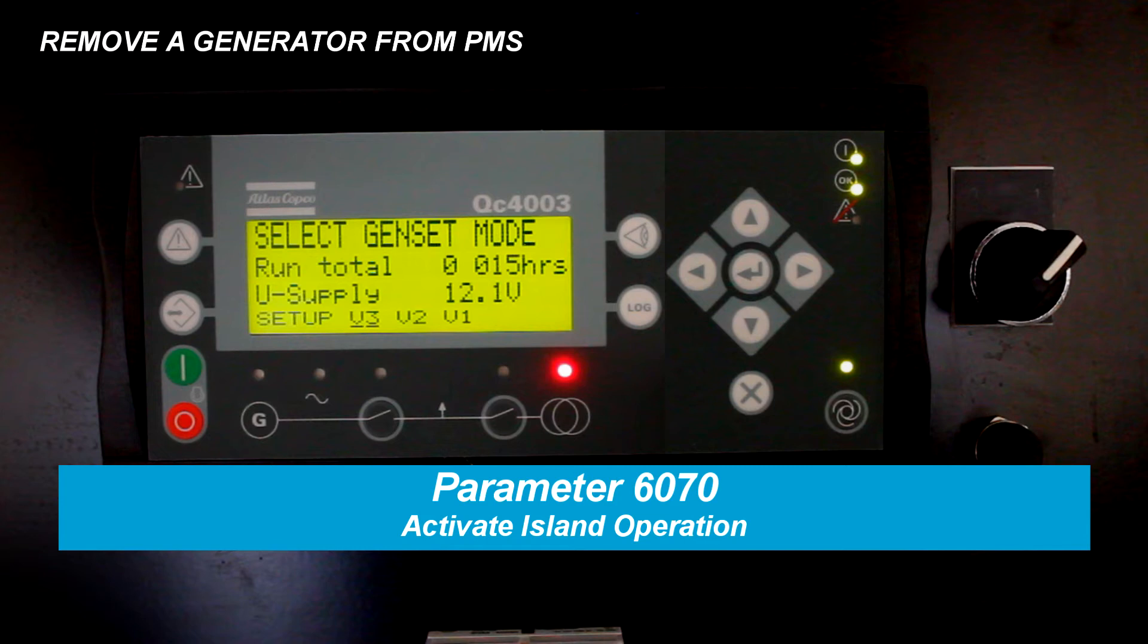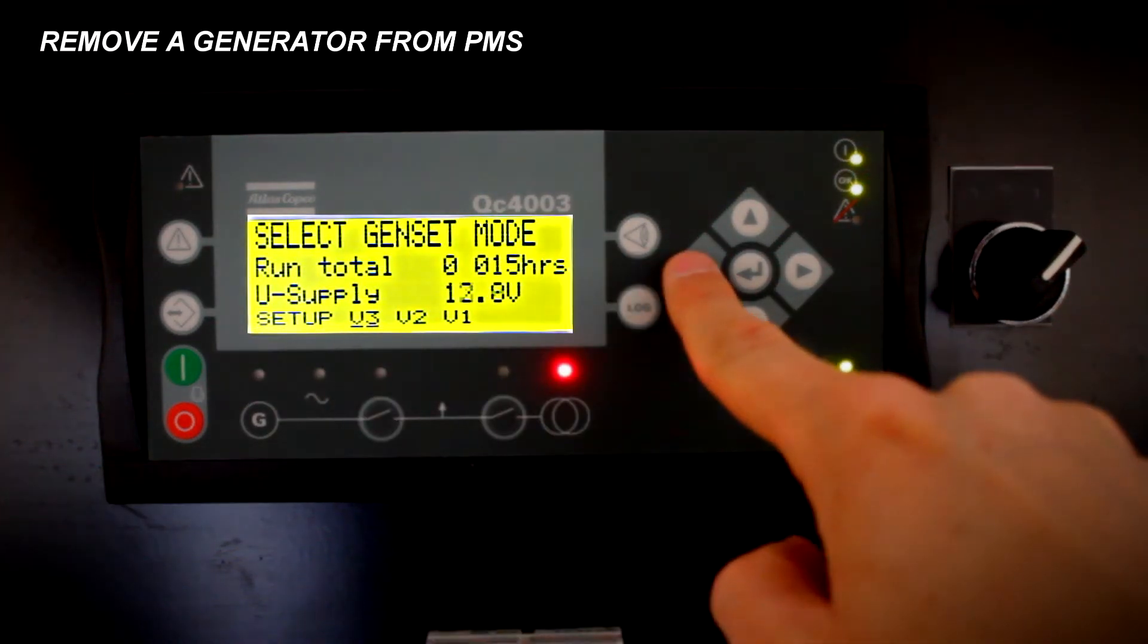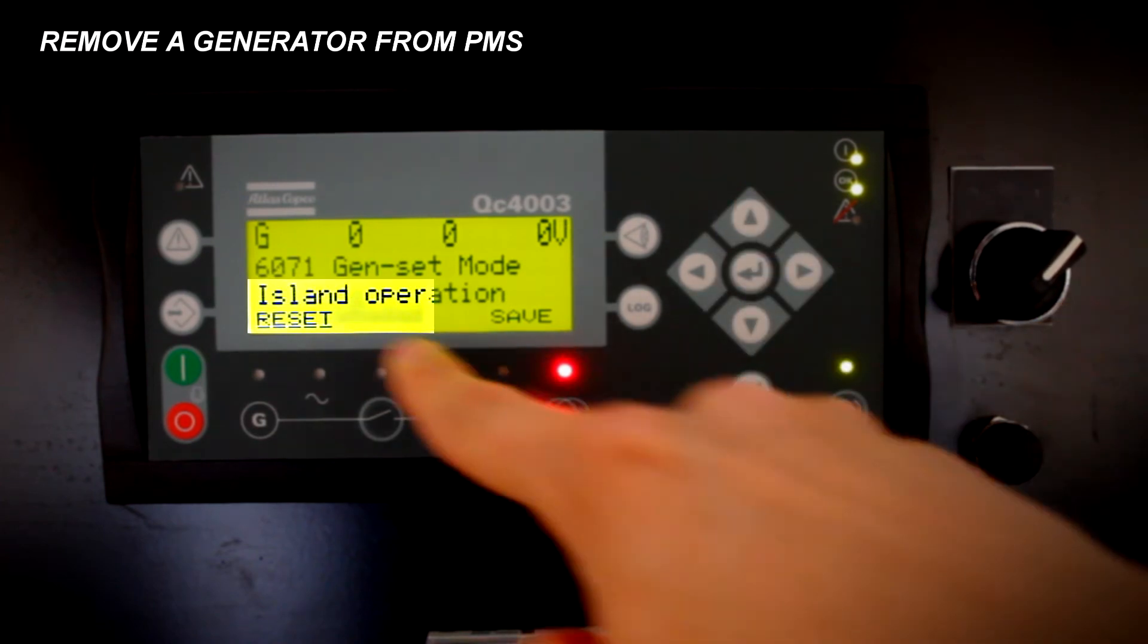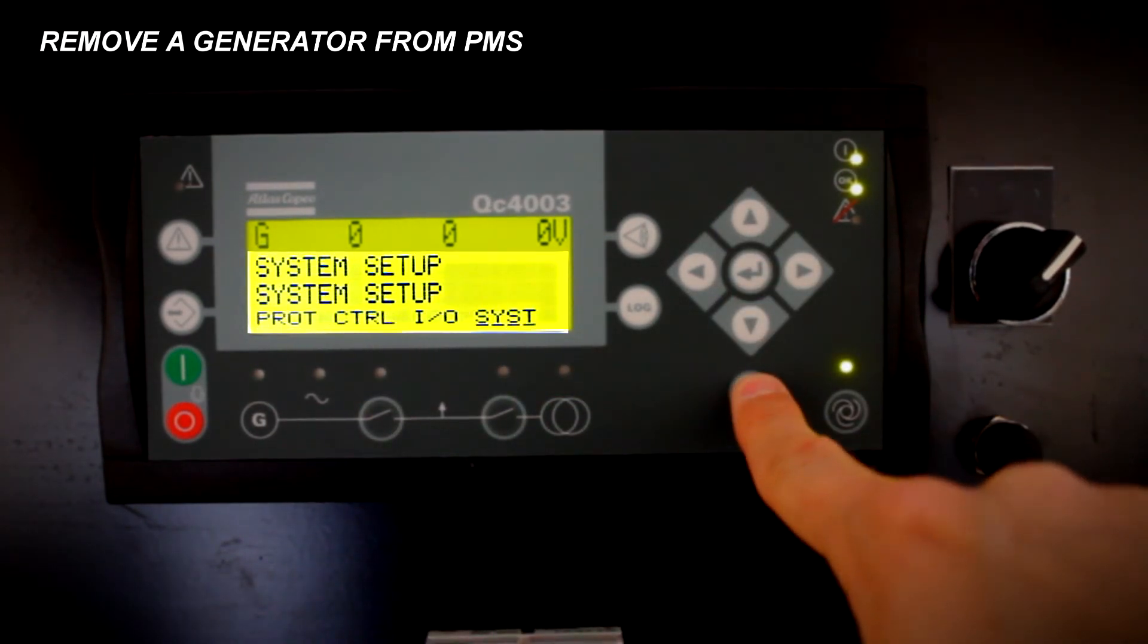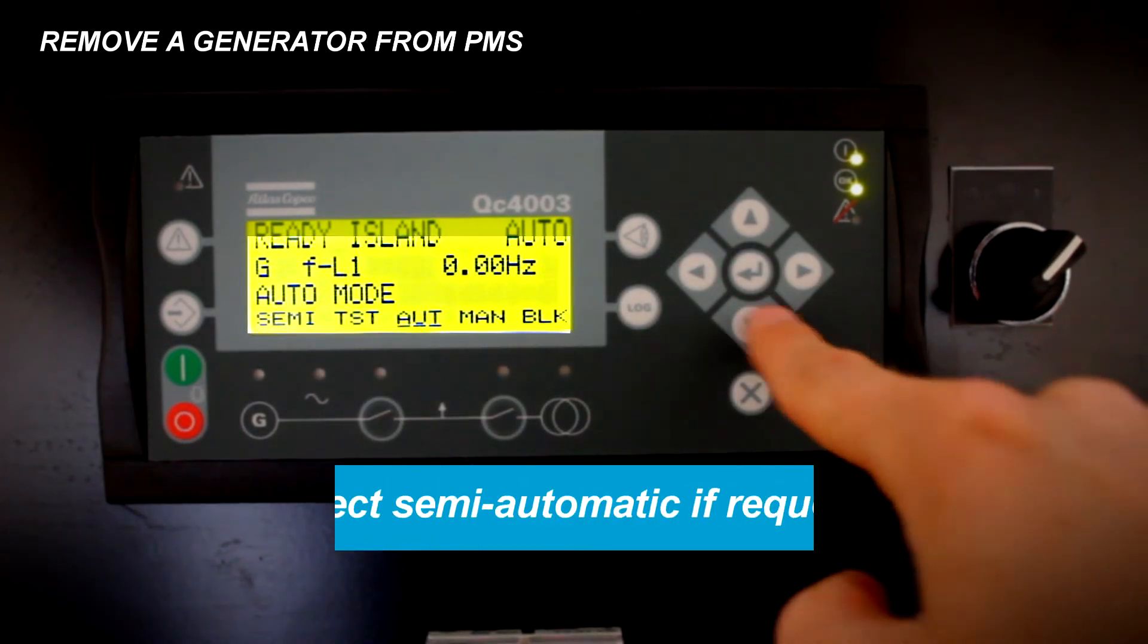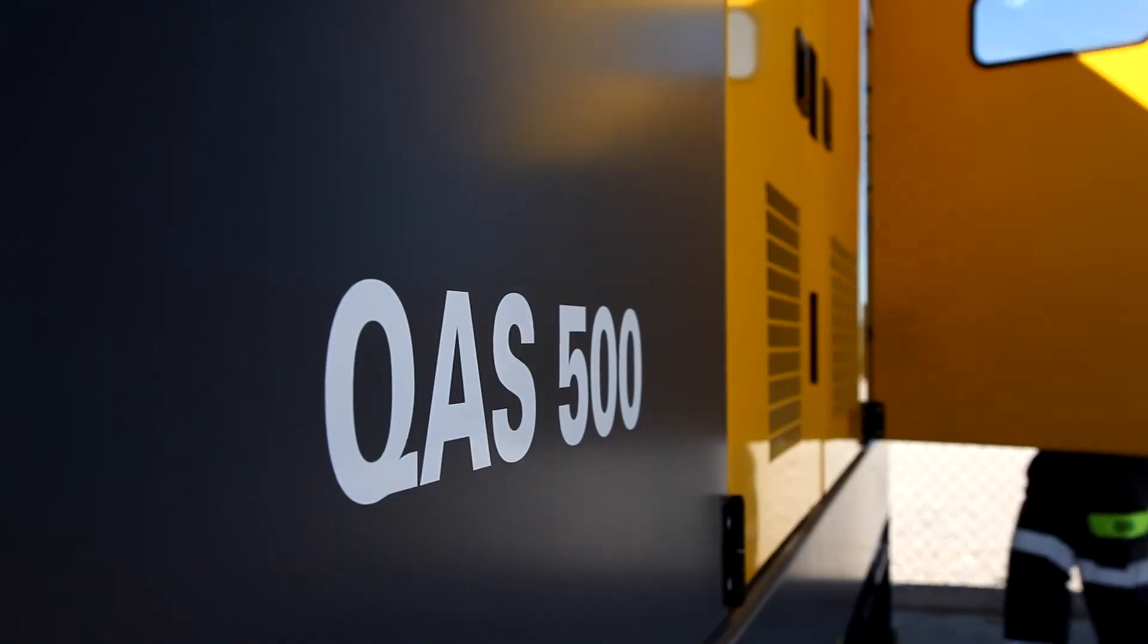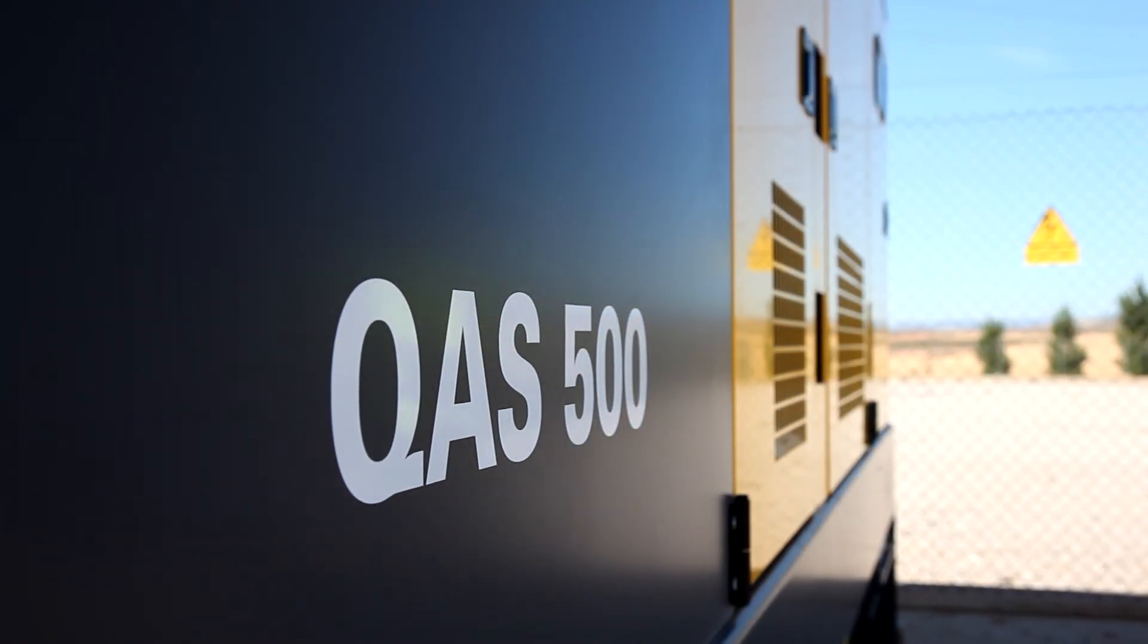Just go through the menu: setup, system, general. Scroll until you find parameter 6070. Enter the customer password if required. Now the unit is no longer connected with the other generators and is ready to operate in island mode.